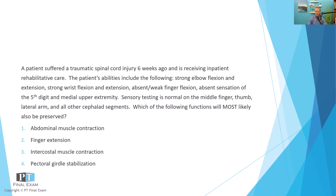This question describes dermatomes and myotomes of the upper extremity, and you have to determine what else is likely to be preserved. The answer options are: one, abdominal muscle contraction; two, finger extension; three, intercostal muscle contraction; and four, pectoral girdle stabilization.